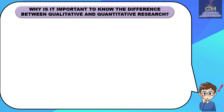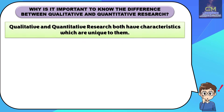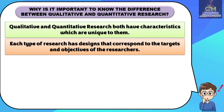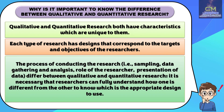Before we end our discussion, let's answer this final question: why is it important to know the difference between qualitative and quantitative research? Qualitative and quantitative research both have characteristics unique to them, and each type has designs that correspond to the targets and objectives of researchers. Processes such as sampling, data gathering and analysis, the role of the researcher, and the presentation of data differ between them. It is therefore necessary that researchers fully understand how one is different from the other in order to know which is the appropriate design to use.